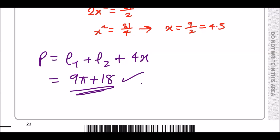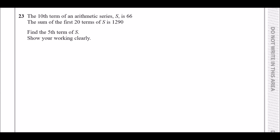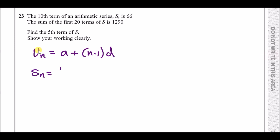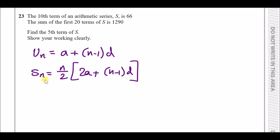The last question: the 10th term of an arithmetic series S is 66, and the sum of the first 20 terms is 1290. Find the fifth term. The nth term formula is a plus (n minus 1)d, and the sum of the first n terms is n over 2 times (2a plus (n minus 1)d).